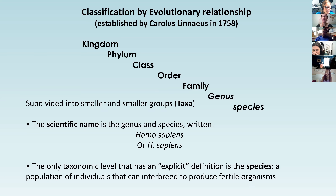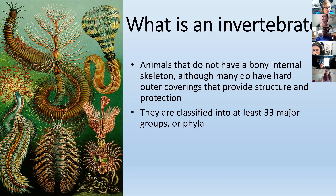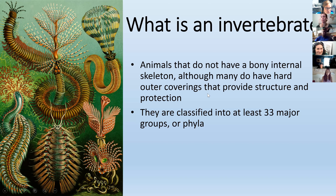Invertebrates are basically animals that don't have a bony skeleton or internal bones, but they do often have outer hard structures. They are classified into over 33 groups or phyla, and some of the common marine ones are what we'll cover today.